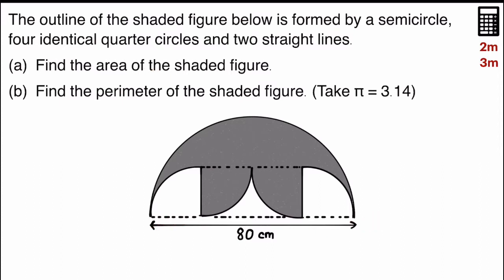A. Find the area of the shaded figure. B. Find the perimeter of the shaded figure. Take pi equals to 3.14.